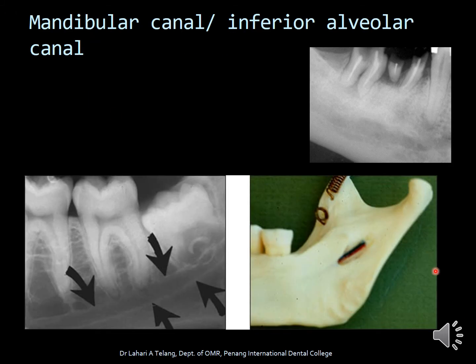The mandibular canal, also called the inferior alveolar canal, is indicated by the black arrow marks. The inferior alveolar nerve passes through this canal. It can have varied appearances but is an important landmark, and is of great significance when placing an implant in an edentulous area.